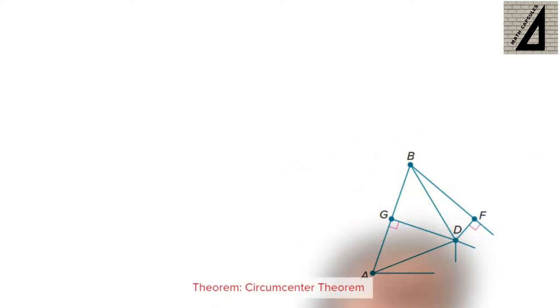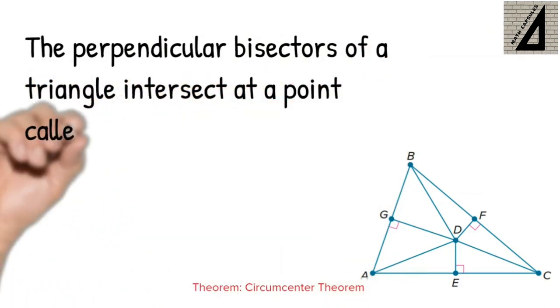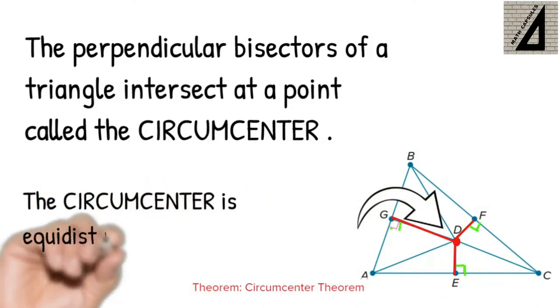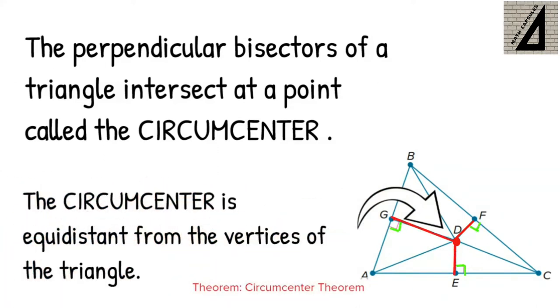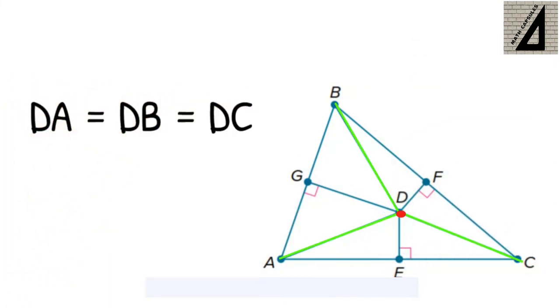The circumcenter theorem states that the perpendicular bisectors of a triangle intersect at a point called the circumcenter. In this triangle, D is the circumcenter of the triangle where it is equidistant from the vertices of the triangle. Equidistant means that DA equals DB equals DC.